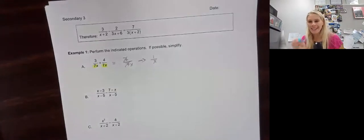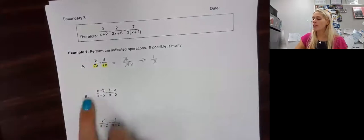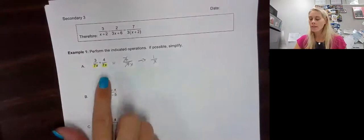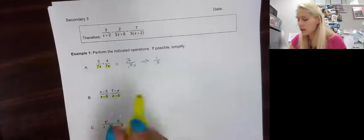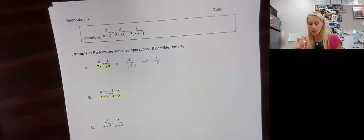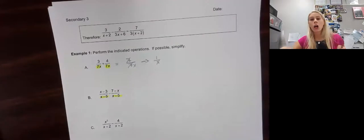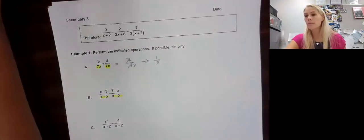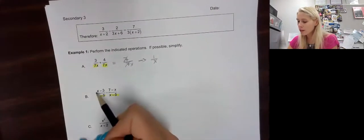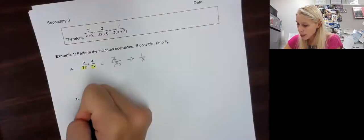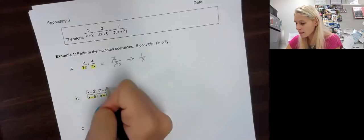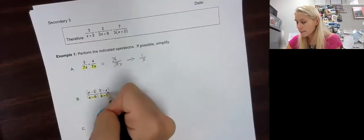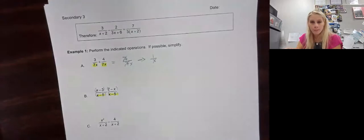Remember how I told you subtraction is going to be really tricky? This is why. In example B, we have a common denominator — one of those denominators doesn't have anything extra, they are common. Also remember from the last section: you cannot cross out x over x — remember, these are groups, so you cannot eliminate parts of them.